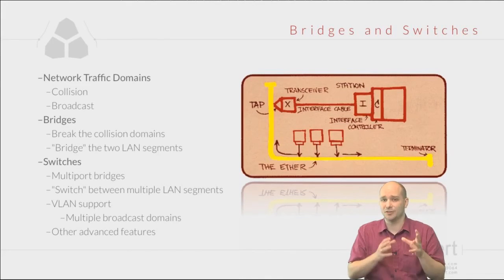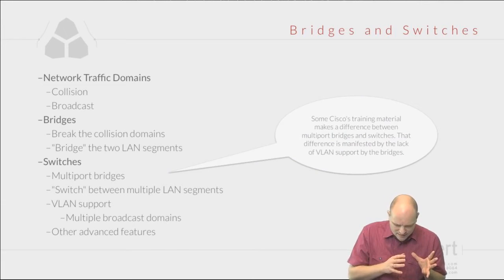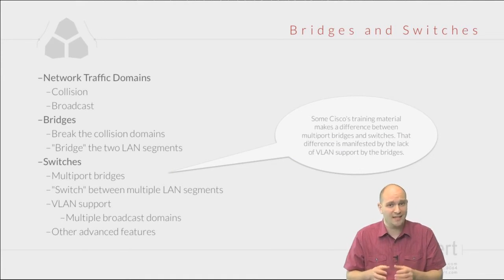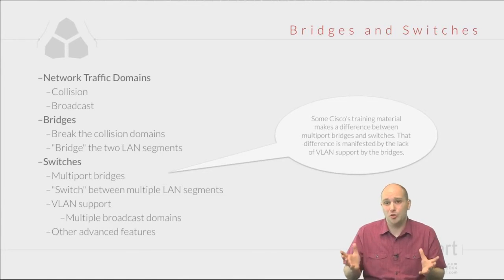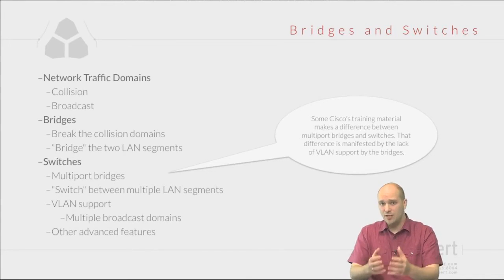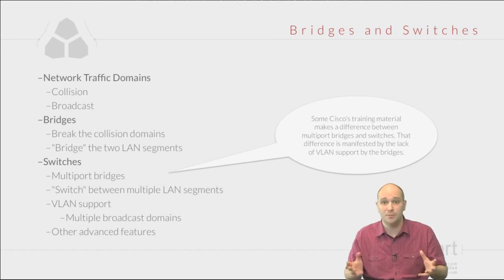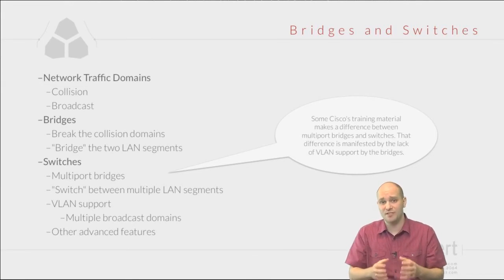There are some significant differences between bridges and switches. According to Cisco documentation, bridges implement their functionality in software, while switches implement their functionality in hardware using dedicated processing units called ASICs. The real difference is that bridges have only two ports, while switches can have any number of ports — four port, eight port, 768 port, or even 4,000 port switches.